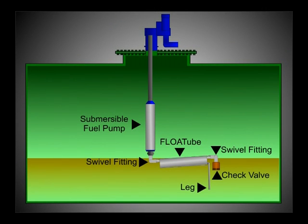Anatomy of a float tube. The float tube can be attached to the end of a submersible pump and fits through a four-inch riser. In this diagram, you can see the float tube is connected to a submersible fuel pump along with two swivel fittings, a check valve, and a leg.